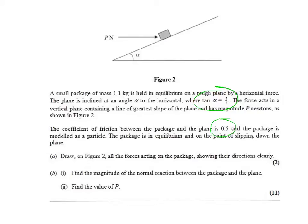We're told that the package is in equilibrium and is on the point of slipping down the plane. The first part of this question says to draw all the forces acting on the package. I would recommend that we draw a diagram like this on any question that involves slopes, so why don't you pause the video now and see whether you can draw an accurate diagram showing all the forces acting on this package.